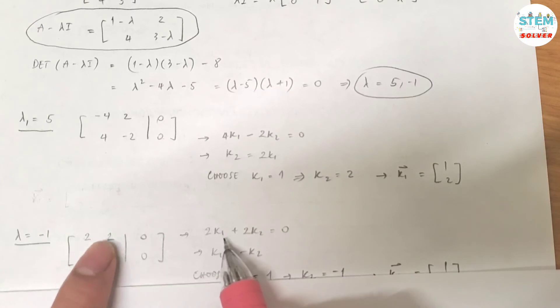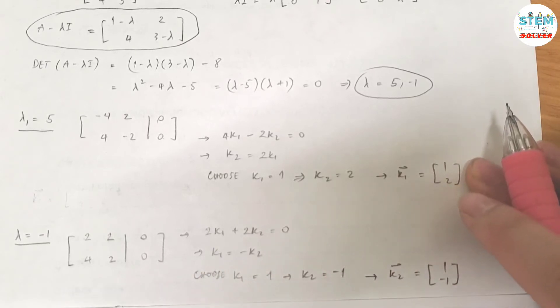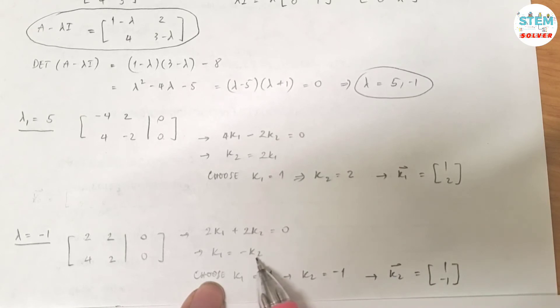That is 2k1 plus 2k2 equals 0. Then for k1, I got k1 equals negative k2. So let's use k1 equals 1.